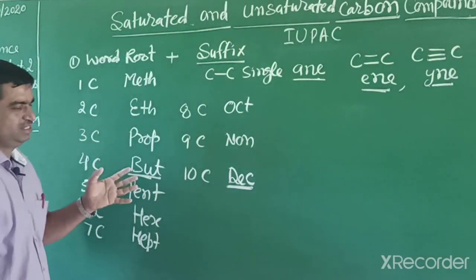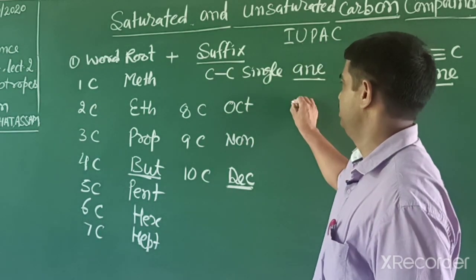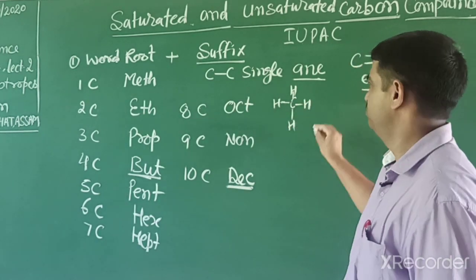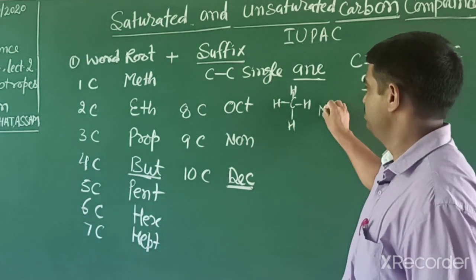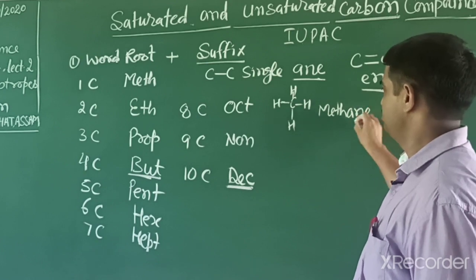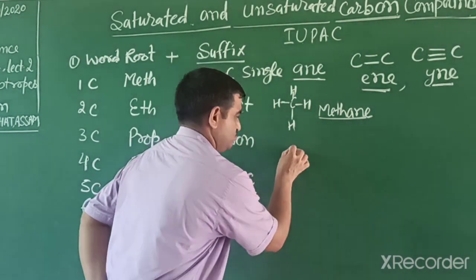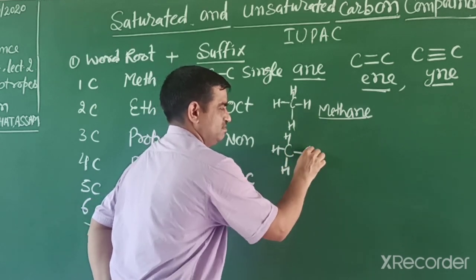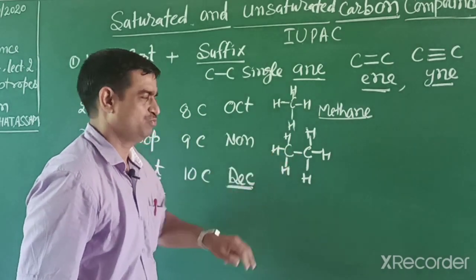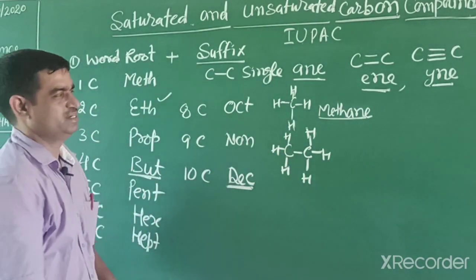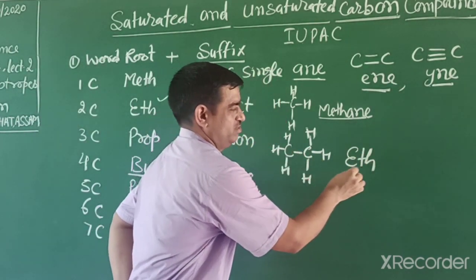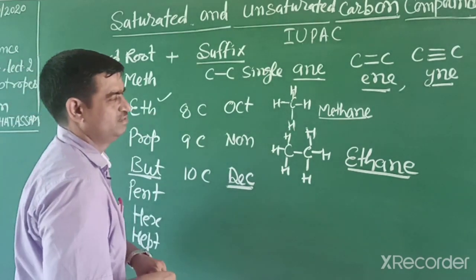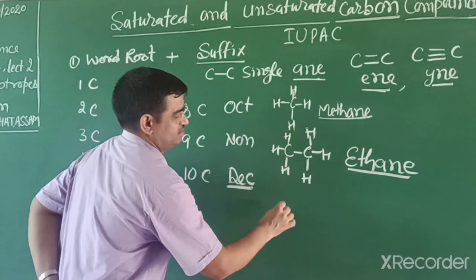So one carbon with single bond: METH + ane = methane. Two carbons with single bond: ETH + ane = ethane. If double bond: ETH + ene = ethene. If triple bond: ETH + yne = ethyne. Three carbons: PROP + ane = propane. Four carbons: BUT + ane = butane, five: pentane, six: hexane, then heptane, octane, nonane and decane.